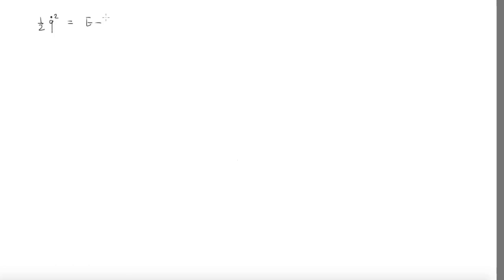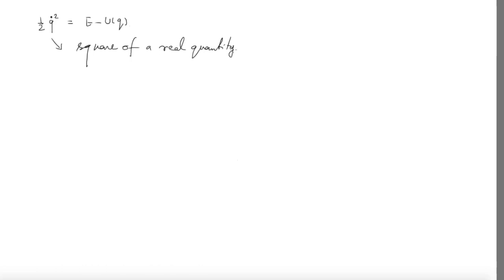I can write the previous equation as: ½q̇² = E − U(q). Note that before integrating, look at the left-hand side — it is the square of a real quantity, so q-dot must be real, which means this can never be negative. The total energy of the system should always be greater than or equal to the potential energy at any q value. So E − U(q) ≥ 0 always.